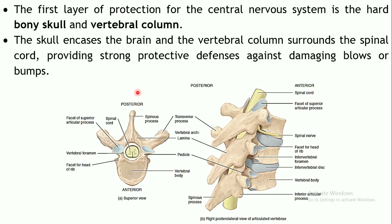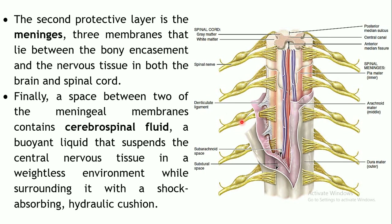If you hit your head, it won't affect your brain because it is protected by the skull. Similarly, the spinal cord is protected by the vertebral column. The second protective layer is formed by the meninges. Within the bony framework of the vertebrae lies the spinal cord, and surrounding it are three membranes. In between the bony encasement and the spinal cord lie the three protective layers which protect both the brain and the spinal cord.